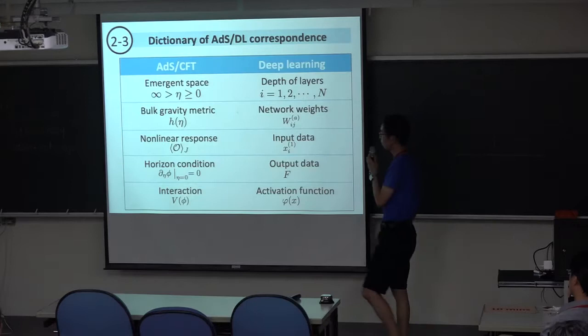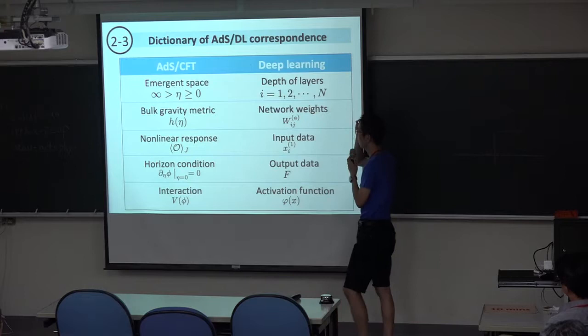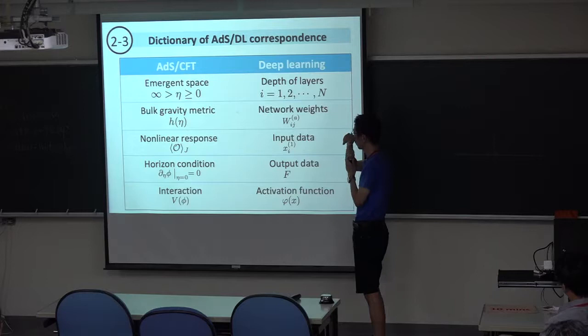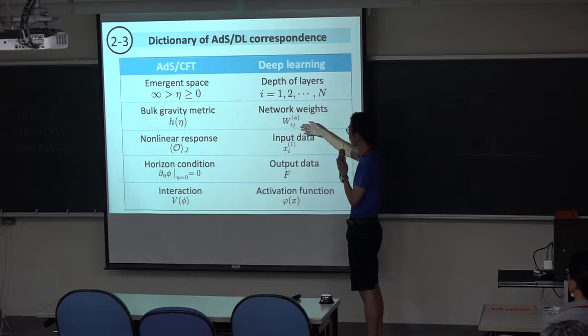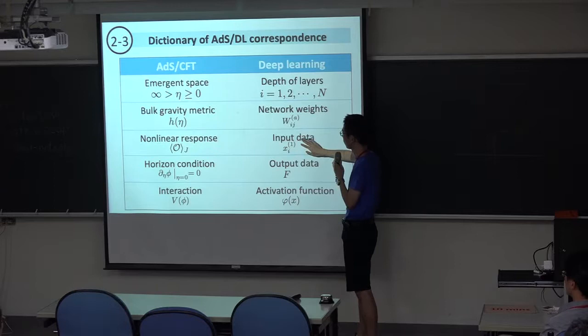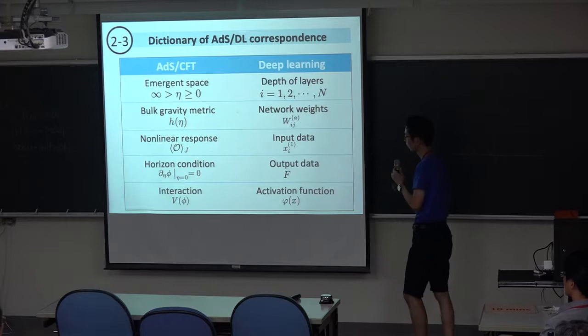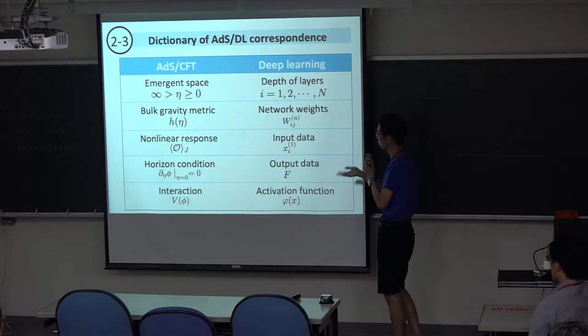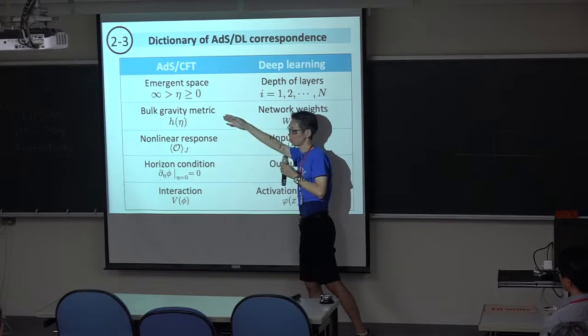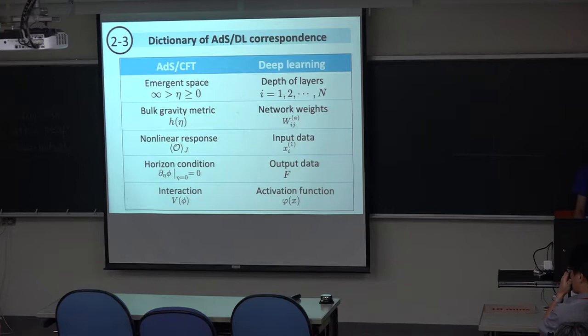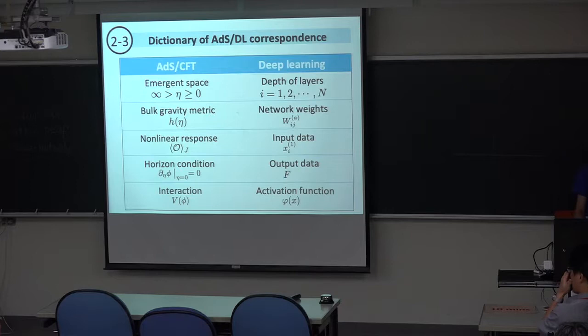The summary of the correspondence is: the gravity metric — specifically a certain combination of metric components — is mapped to neural network weights in a very sparse way. The nonlinear response in CFT maps to the input data, the chiral condensate is the output data, and the interaction term in the bulk is the activation function. This identification allows me to train the system for a given response function to extract the bulk metric.